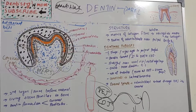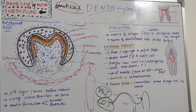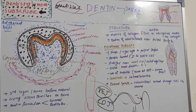In the next session, we'll be learning about types of dentine such as peritubular dentine, intertubular dentine, predentine, odontoblastic processes, primary dentine, secondary dentine, and tertiary dentine.